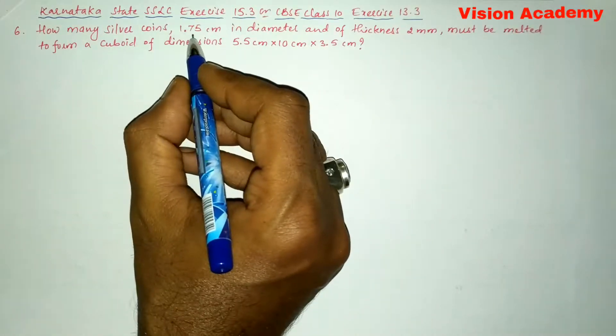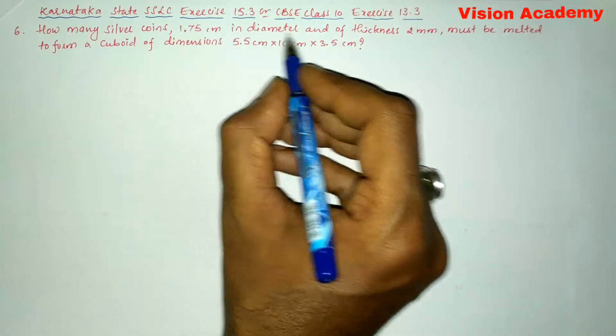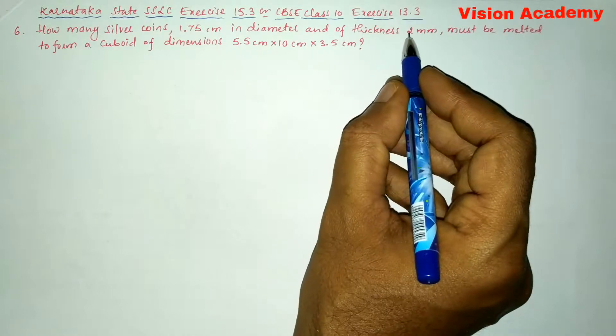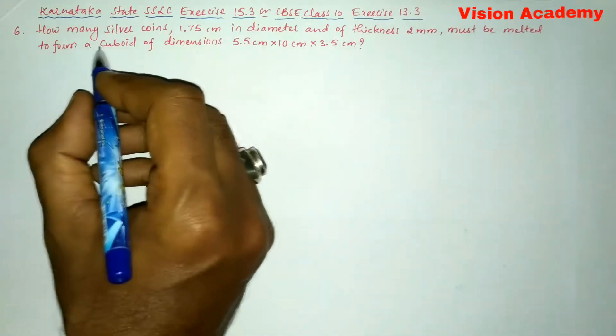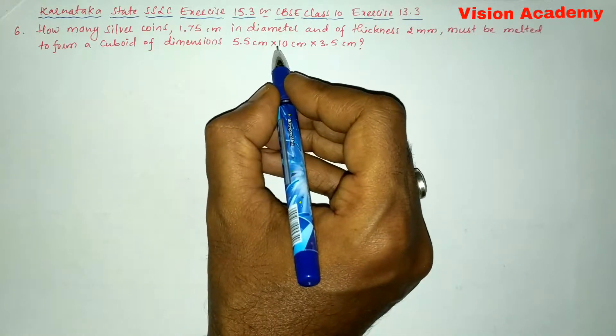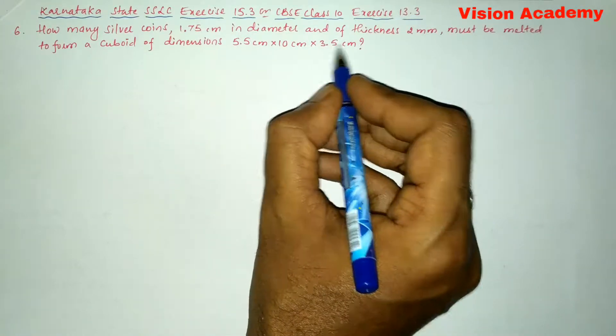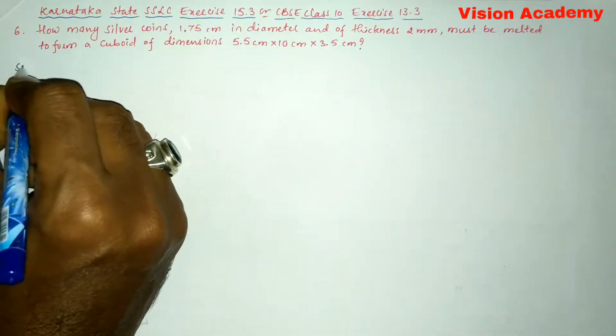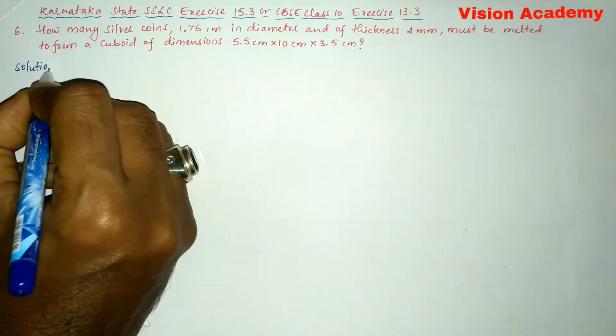How many silver coins 1.75 cm in diameter and of thickness 2mm must be melted to form a cuboid of dimensions 5.5 cm × 10 cm × 3.5 cm? Now let us find the solution for the given problem.